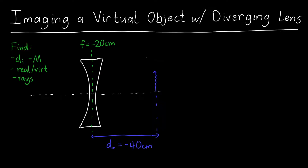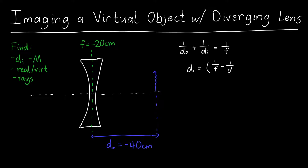I usually start with the math because it tends to be easier and it also helps inform the ray tracing. We're going to start by finding the image distance. We can use our favorite equation: 1/do + 1/di = 1/f. We have do and f, so what we want to find is di, which equals (1/f − 1/do) all inverted.